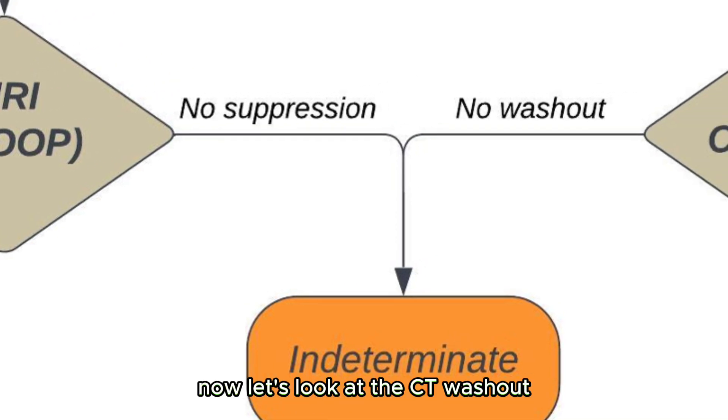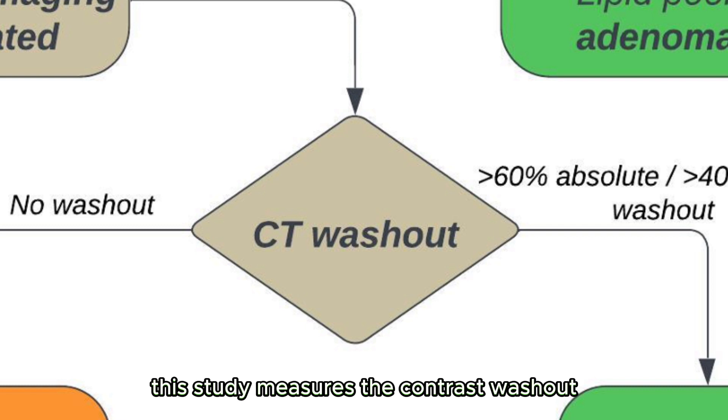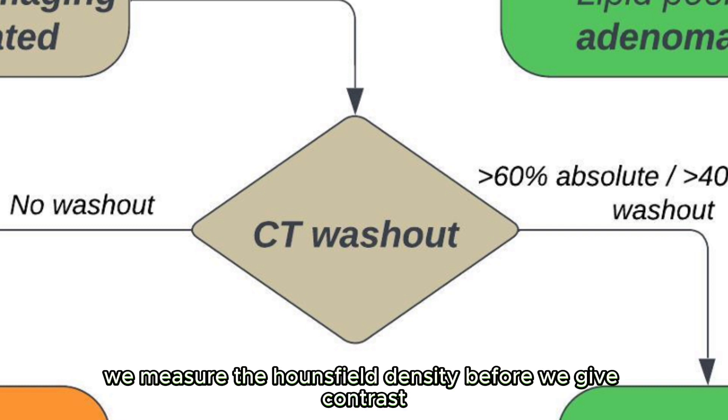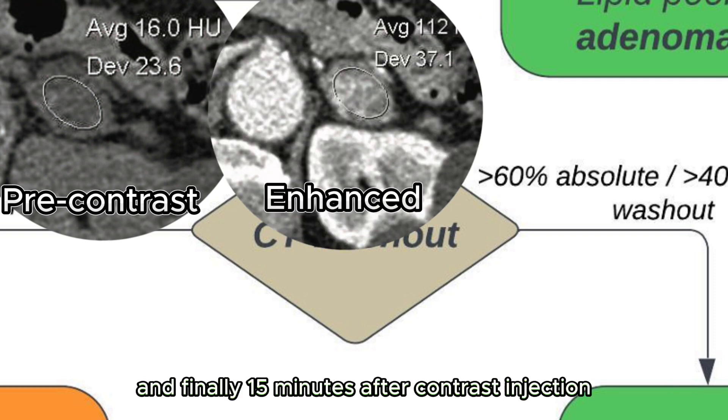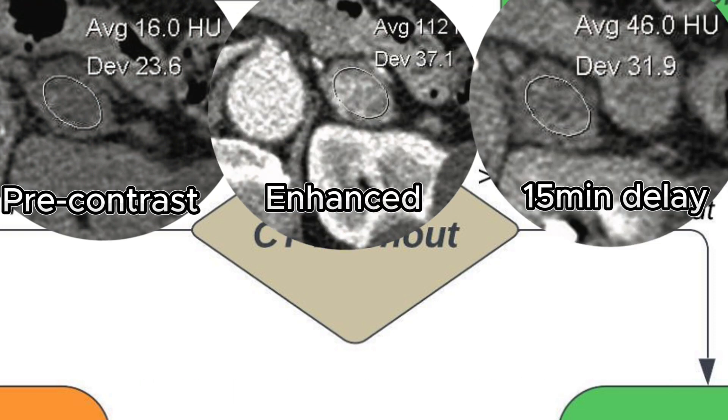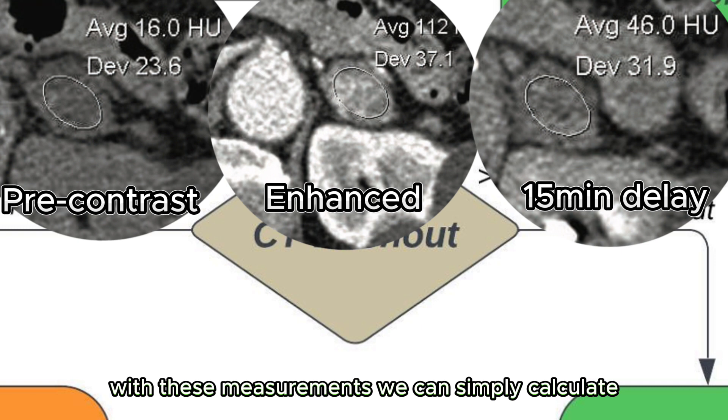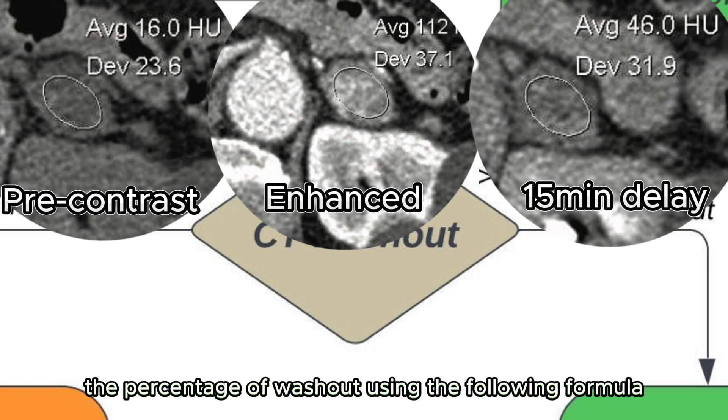Now let's look at the CT washout. As the name implies, this study measures the contrast washout. We measure the Hounsfield density before we give contrast, then during portal venous phase, and finally 15 minutes after contrast injection. With these measurements, we can simply calculate the percentage of washout using the following formula.